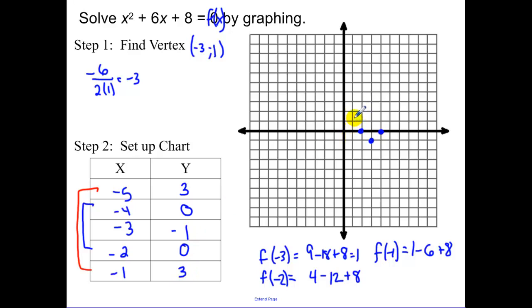So I plot those points. And then I find f of negative 1. Those values are equal to 3. So I plot those points. Now remember, we're solving. Where are our x-intercepts? Or what values made our y to be 0? So our two solutions are negative 4 and negative 2.